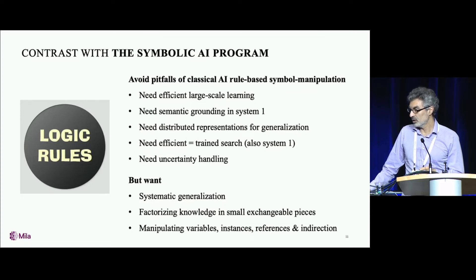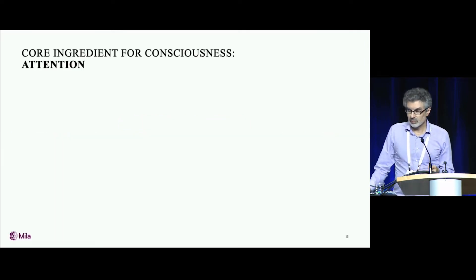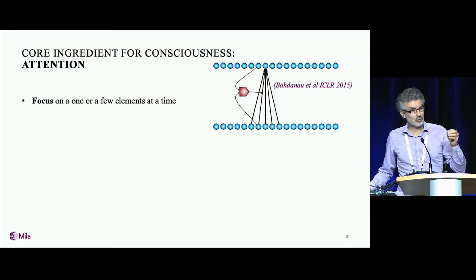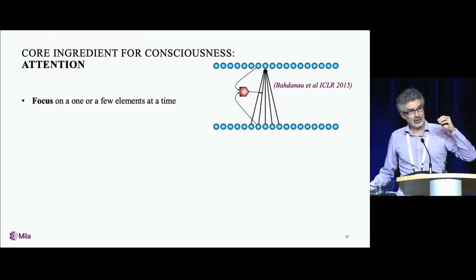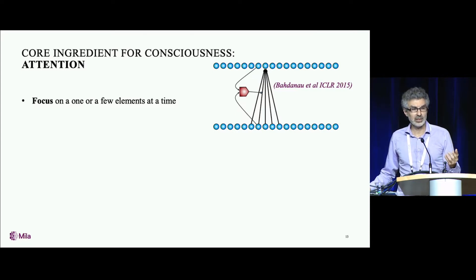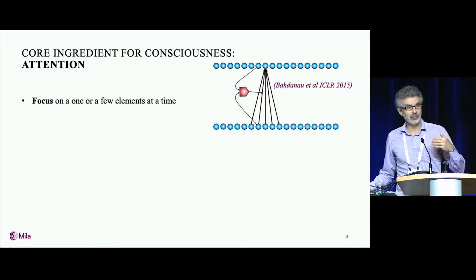Let's talk about attention and consciousness. What is attention? Attention is about doing computation in a focused way. We're going to sequentially focus computation on one or a few elements at a time. We realized around 2014 that this was extremely powerful and was the reason why we were able to get a breakthrough in machine translation.